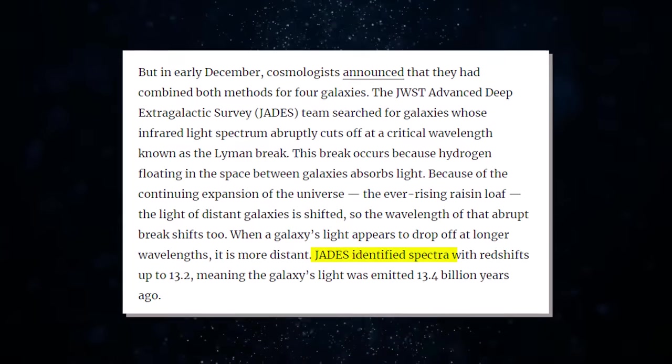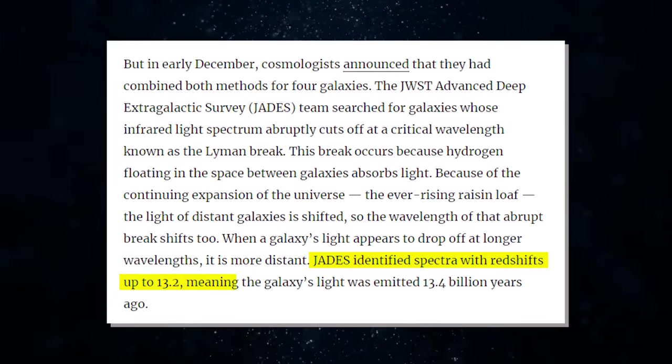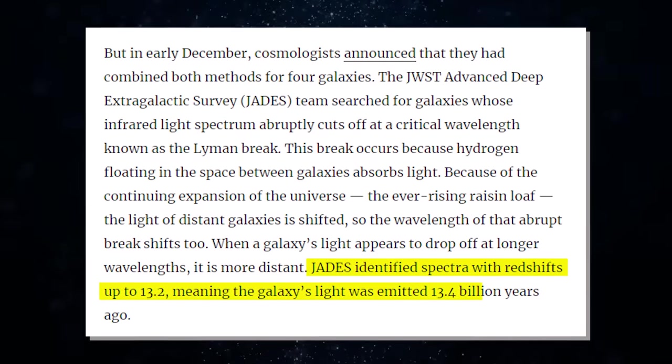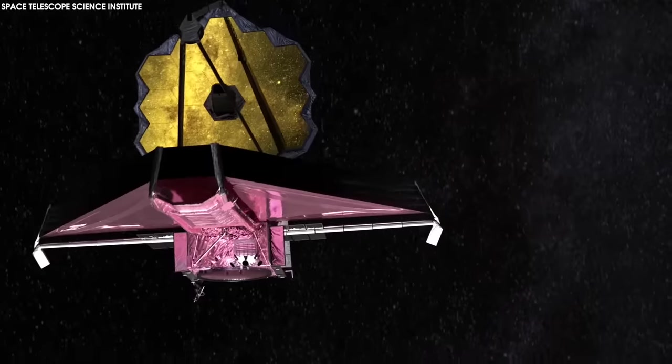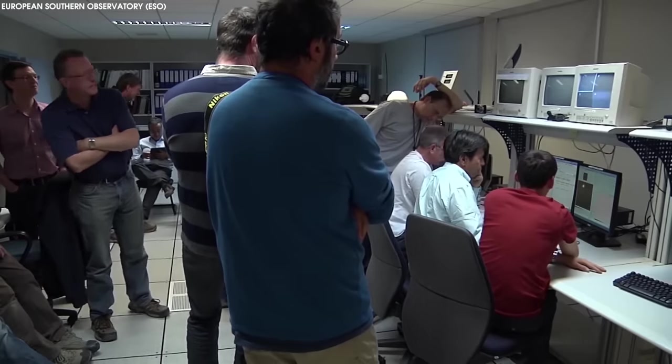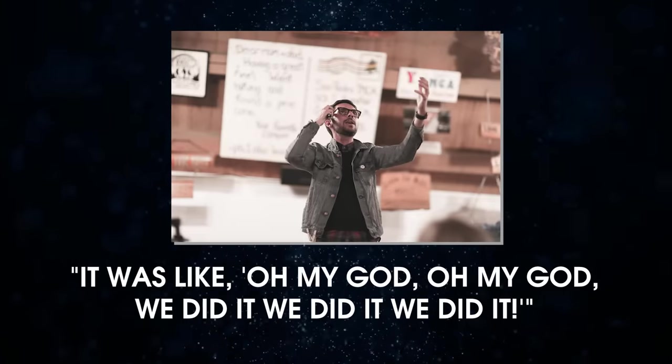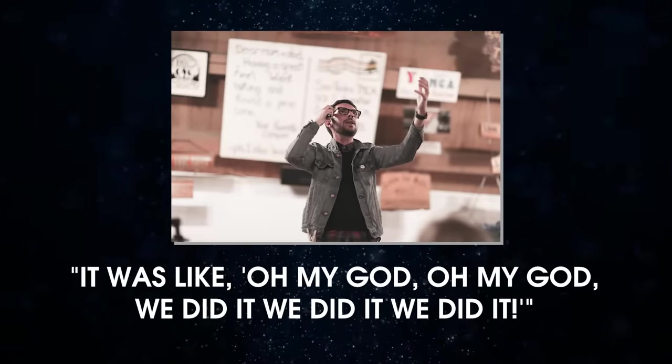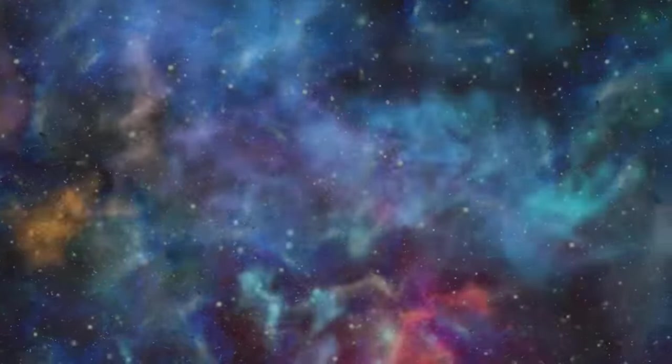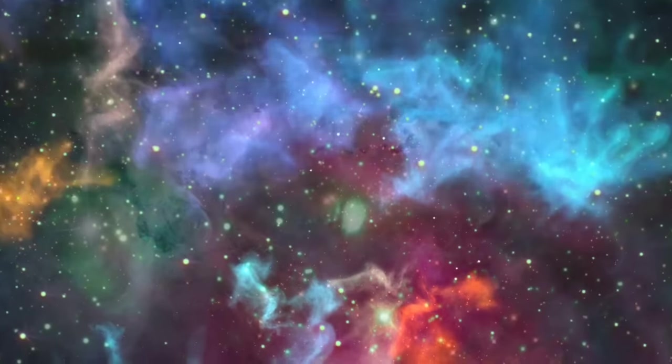JADES identified spectra with redshifts up to 13.2, meaning the galaxy's light was emitted 13.2 billion years ago. As soon as the data was downlinked, JADES researchers began freaking out in a shared Slack group, according to Kevin Hainline, an astronomer at the University of Arizona. He said, it was like, oh my god, oh my god, we did it, we did it, we did it. These spectra are just the beginning of what I think is going to be astronomy changing science, he said.